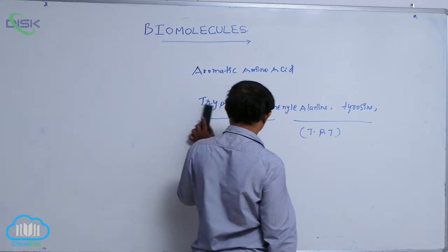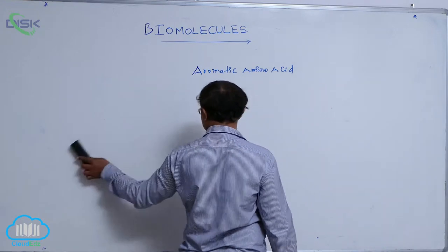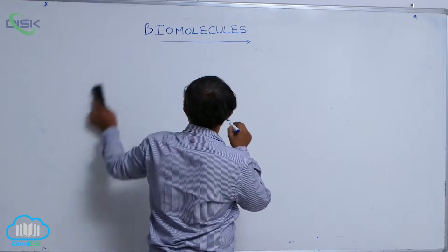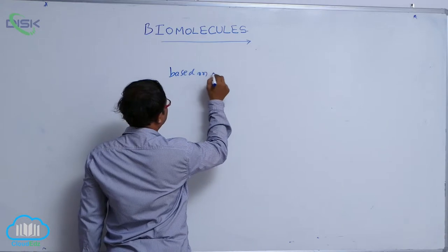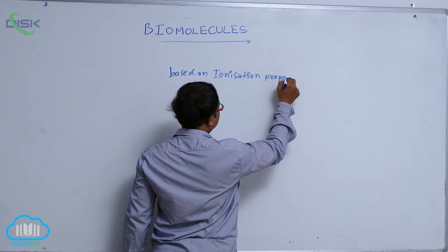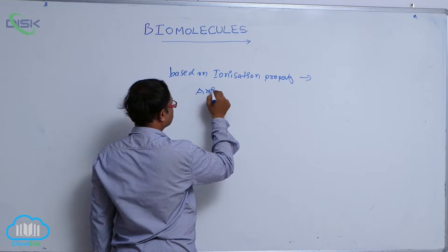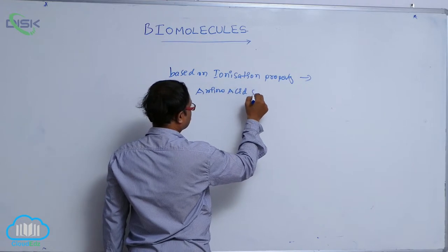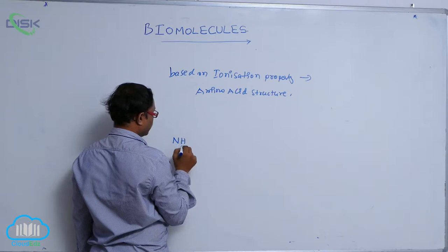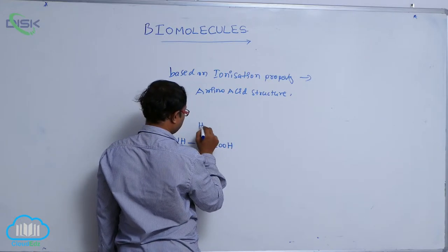After that, based on ionization properties, amino acids have different types. At the normal amino acid level, based on ionization property, the amino acid structure generally consists of: an amino group (NH2), a carboxylic group, a hydrogen group, and an R group.